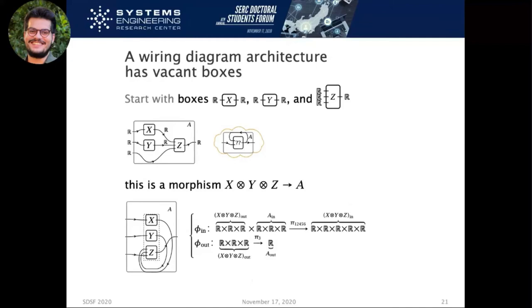So let's think about this. We have some boxes that are not really connected. Then we connect them, and we say what the expected phi in and phi out functions are, or how the composite system translates what happens in those boxes. But at this point, they're kind of vacant. There is no behavior in the boxes. They're completely black boxed.